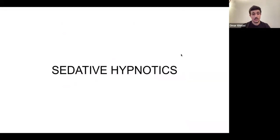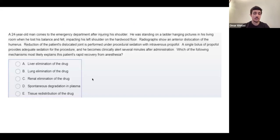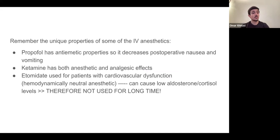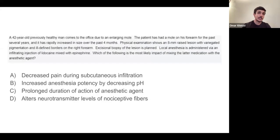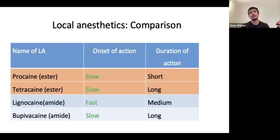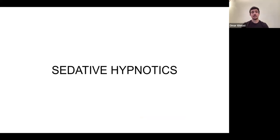That's it for anesthetics - we covered four lectures. Remember propofol's metabolism, why epinephrine is used with local anesthetics, unique properties of IV anesthetics, and malignant hyperthermia - most commonly occurs with succinylcholine, and the antidote is dantrolene.